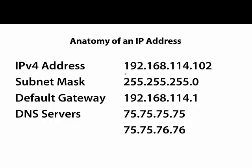Now let's look at the network configuration of a node on a network. First we have the IP address. IP addresses are made up of four octets: one, two, three, four.